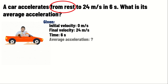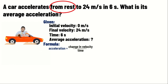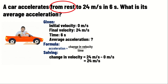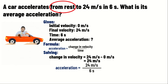Our main goal is to find the average acceleration. We will use the formula: average acceleration is equal to the change in velocity divided by the time. To get the change in velocity, we will subtract the initial velocity from the final velocity: 24 m per second minus 0 m per second is equal to 24 m per second. Thus, the change in velocity is 24 m per second. Substituting the given values: average acceleration equals 24 m per second divided by 6 seconds. Therefore, the average acceleration of the car is 4 m per second squared.